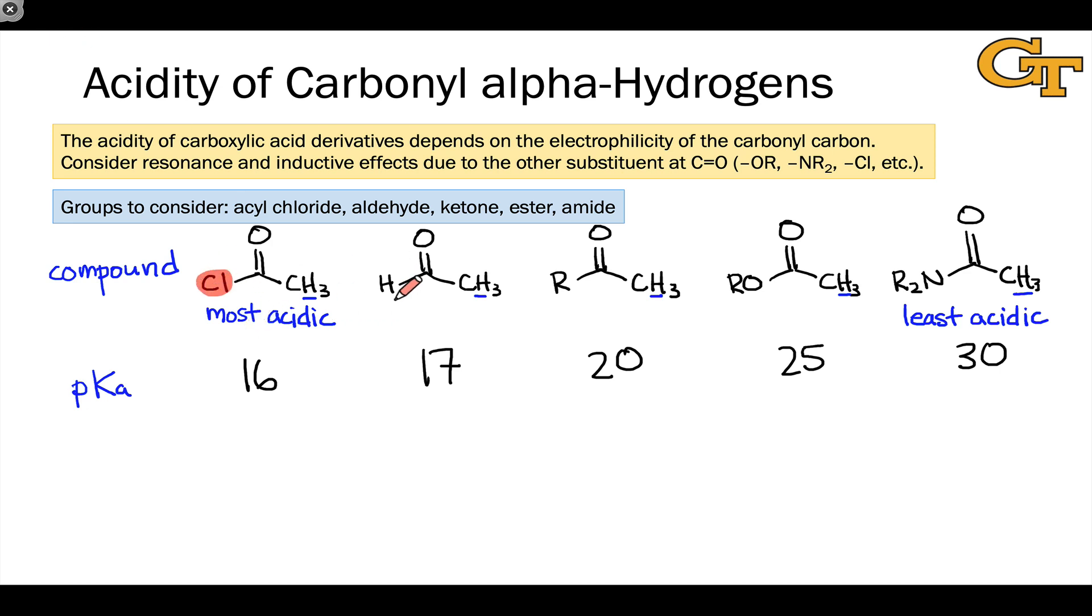One of the things we notice is that as the electronegativity of this group attached to the carbonyl carbon decreases, or as its electron donating ability goes up, the acidity of the compound goes down. And we can understand this acidity trend by considering electron donation from this other substituent. And so this trend is really a combination of inductive effects due to the electronegativity of that group and resonance effects involving the donation of electron density to the carbonyl carbon.